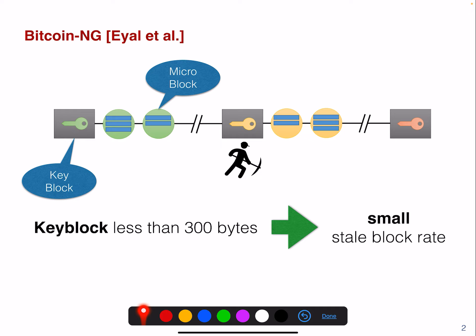The key block is less than 300 bytes in size, so it's quite simple to propagate these key blocks in the peer-to-peer network. We should therefore have a small stale block rate.